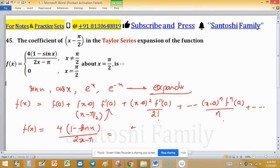It can be written as 4[1 - cos(x - π/2)] divided by 2(x - π/2).